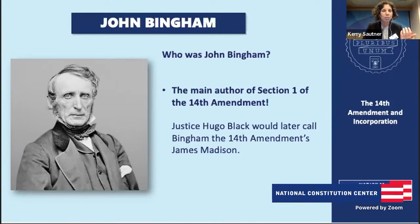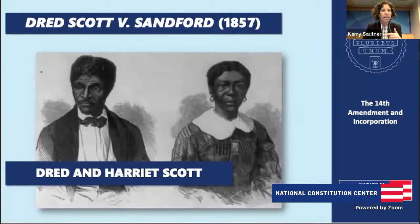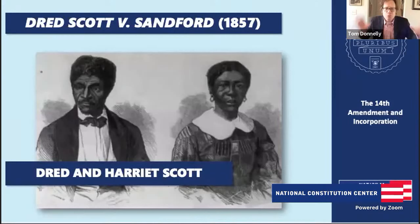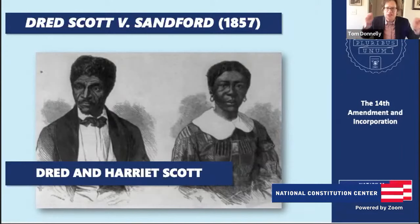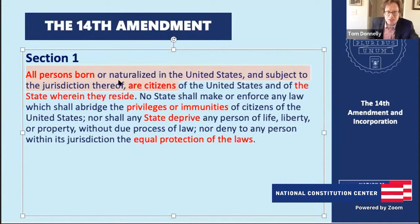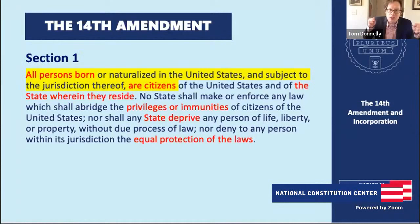One of our charges is to spread the word about Bingham — if he is the James Madison of the second founding, we should know about him as much as we know about James Madison. Now let's dive into the first sentence of the 14th Amendment and its job of fixing the wrongs of Dred Scott. The Dred Scott decision in 1857 effectively said African Americans can't be United States citizens and had 'no rights which the white man was bound to respect.' The 14th Amendment's citizenship clause says crisply and clearly: Supreme Court, Chief Justice Taney, you are wrong. African Americans can be United States citizens.